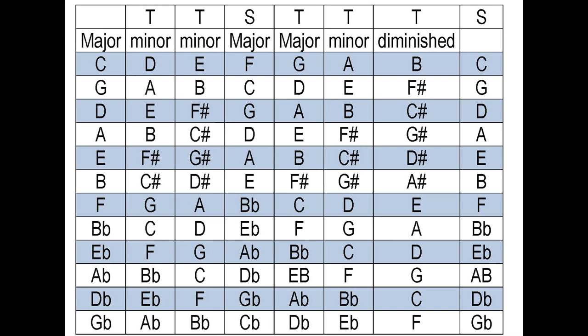The second row is the chord type: major, minor, minor, major, major, minor, diminished. So in your C major scale, the chords that are available to you are C major, D minor, E minor, F major, G major, A minor, and B diminished. So if you're writing a song in the key of C, or using that collection of notes C, D, E, F, G, A, B, and C, those are the chords that will work automatically. They'll just sound good because all those chords are built using those notes.